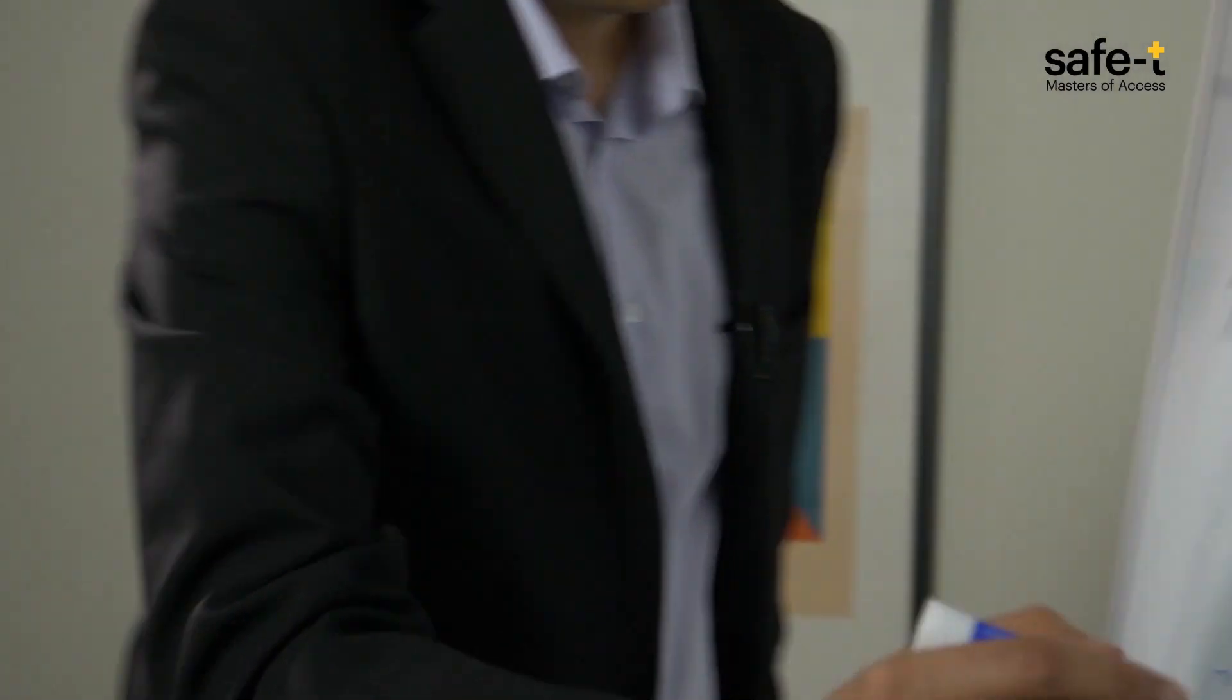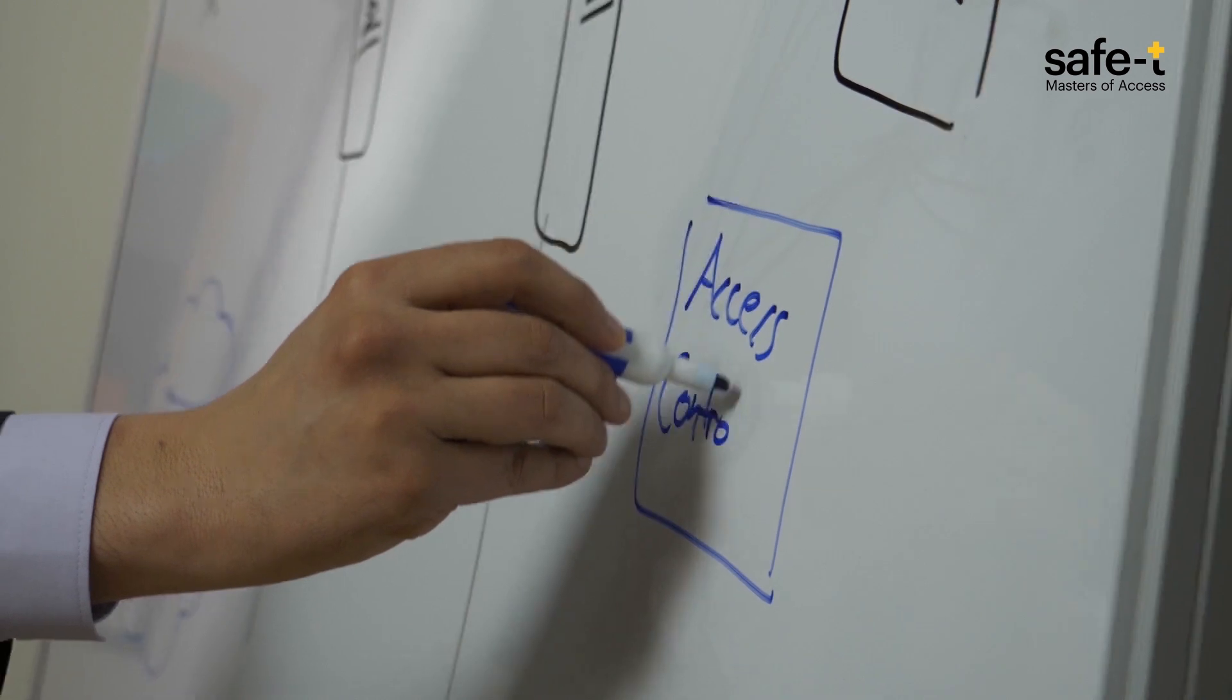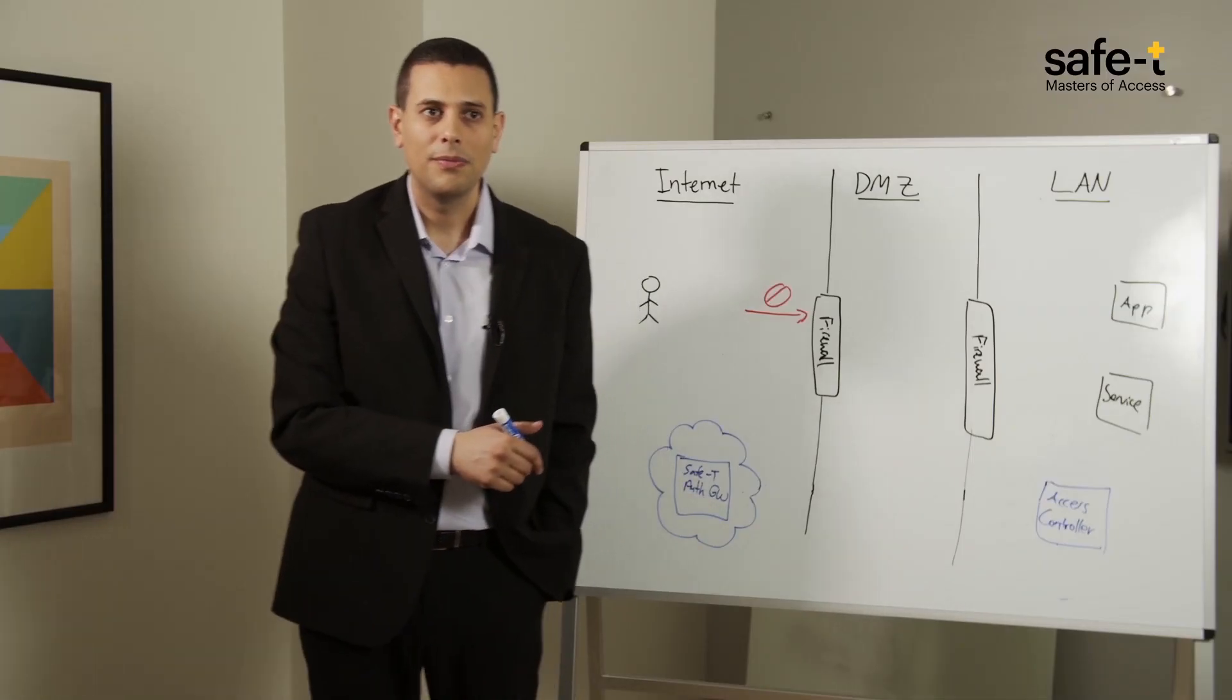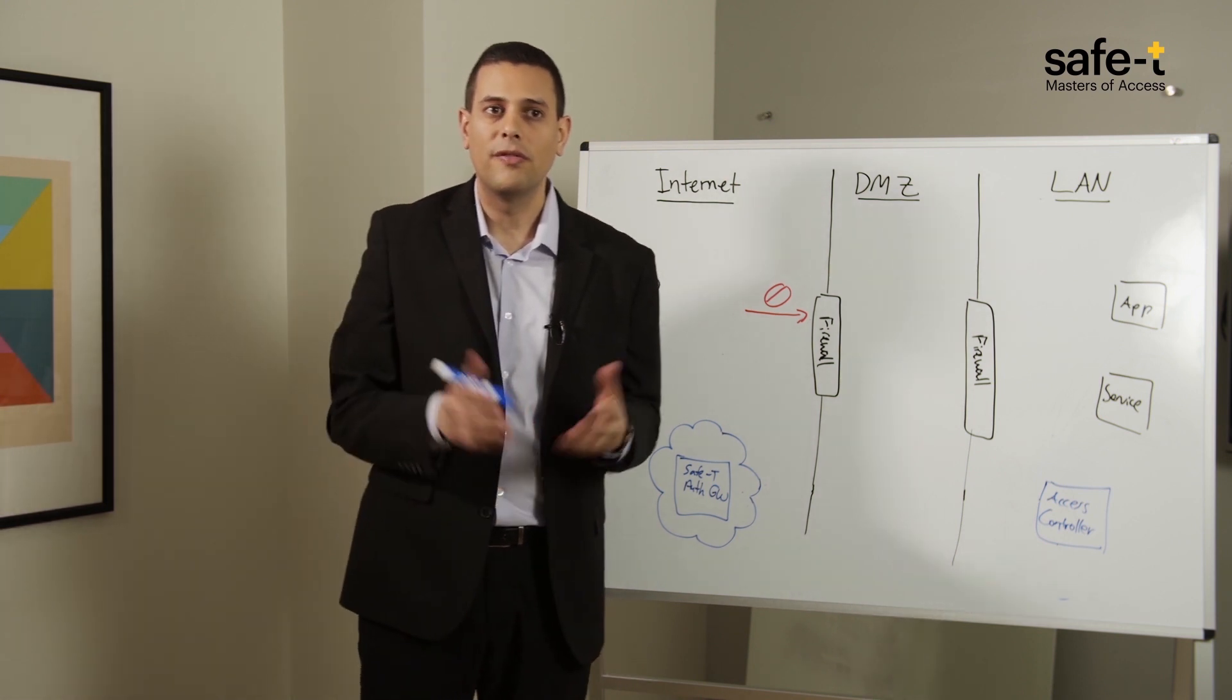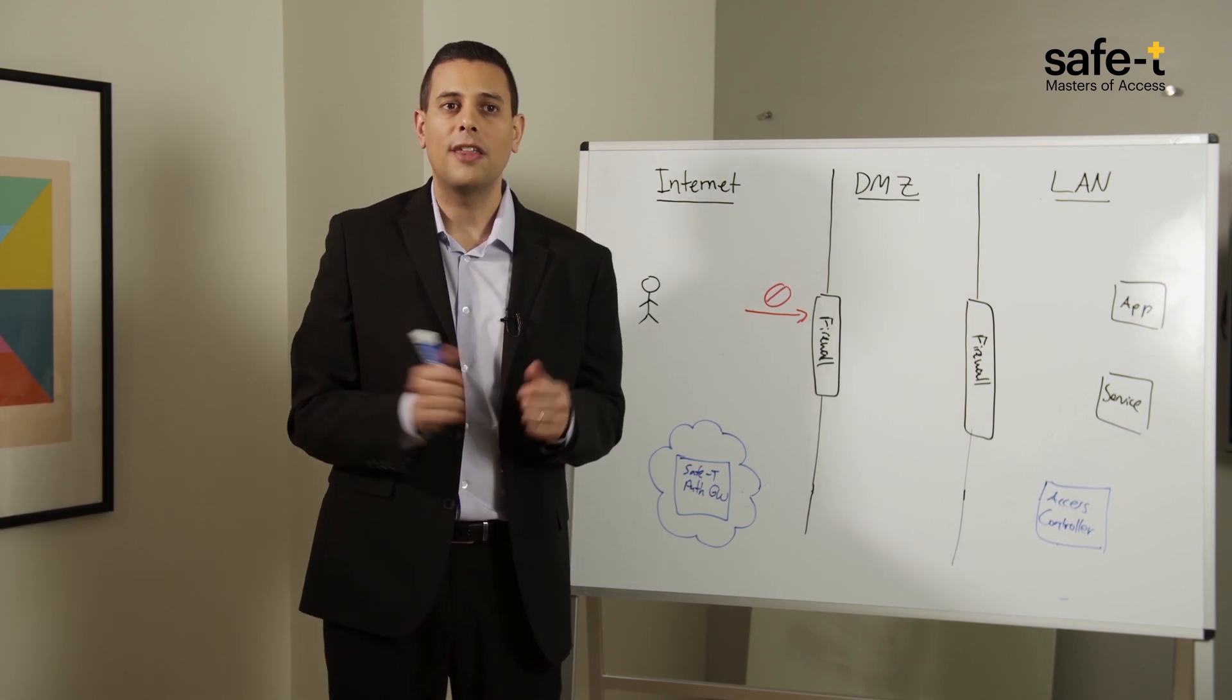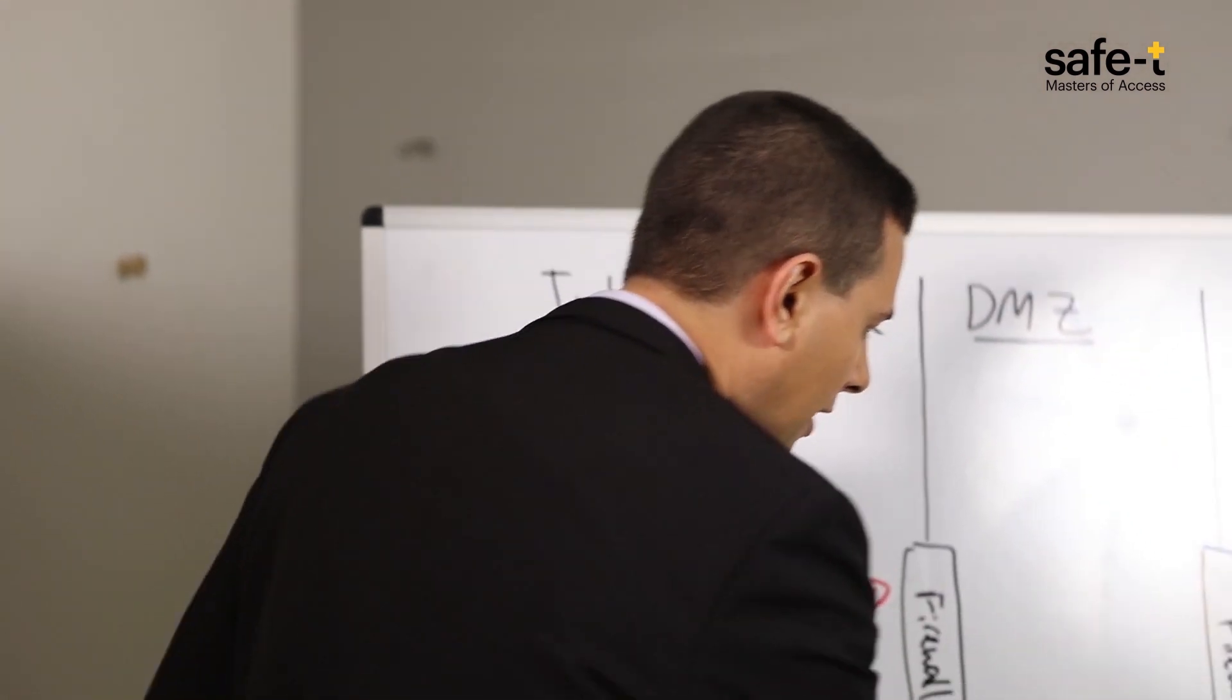The second piece of the Safety solution is the Safety Access Controller, which is also a virtual appliance and is deployed on the back end of the organizational network behind a completely closed firewall. Access Controller utilizes Safety's patented technology called Reverse Access to initiate an outbound connection to the same public authentication gateway and immediately picks up the user input and securely pulls it inside.